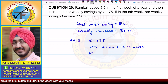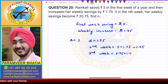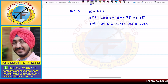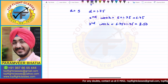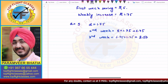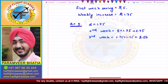The third week's savings will be 6.75 plus 1.75, that is 8.5. And in the fourth week we add 1.75 again, and in the fifth week we add 1.75 again. So we are adding 1.75 each time. Clearly the first term a is equal to 5, and the common difference d is equal to 1.75.